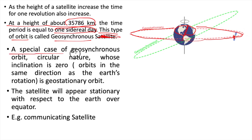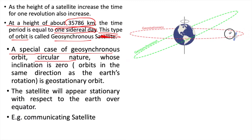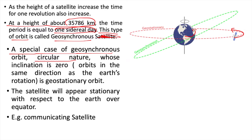A special case of geosynchronous orbit is one that is circular in nature and whose inclination is zero. Inclination zero means the orbital plane matches the equatorial plane. In that case, the satellite rotates at the same speed as the Earth rotates on its axis, so the satellite takes exactly the same time to complete one revolution as the Earth takes to complete one rotation.